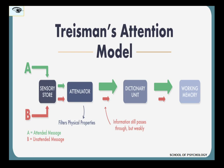Attenuation means how the strength, the value, the effect of a stimulus can be reduced. This particular theory proposed that the stimuli which were not getting access through the selective filter at a given moment of time — as that was proposed by Broadbent — as per this theory, they will not be completely blocked.